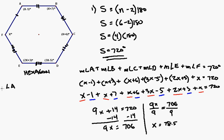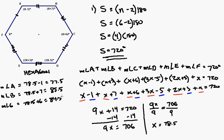So, angle A then, measure of angle A, would be 78.5 minus 1. So, that's going to be 77.5. Measure of angle B is going to be 78.5 plus 7. So, that's going to be 85.5. Here, I've got x plus 6. So, measure of angle C is going to be 78.5 plus 6. So, that's 84.5.